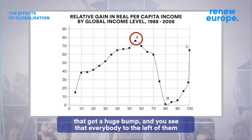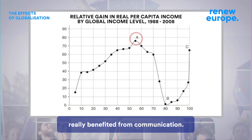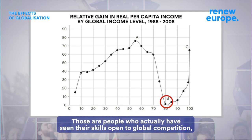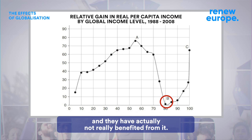And you see that everybody to the left of them really benefited from globalization. On the right, however, you get point B, which are people who actually didn't benefit from those 20 years. The people in that position are the western middle classes — those are people who have actually seen their skills exposed to global competition and have not really benefited from it.